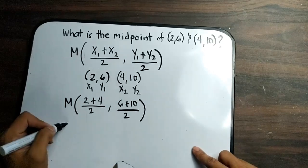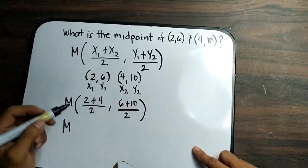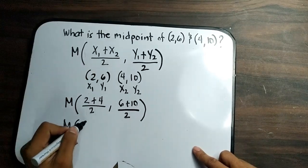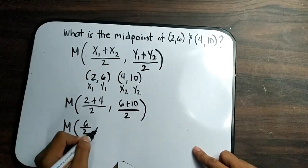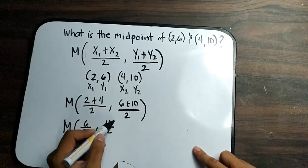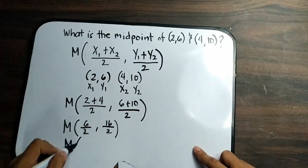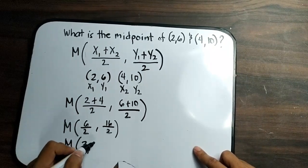So what is the midpoint? The midpoint between (2,6) and (4,10) is 6 divided by 2, 16 all over 2, or simply, the midpoint is (3,8).